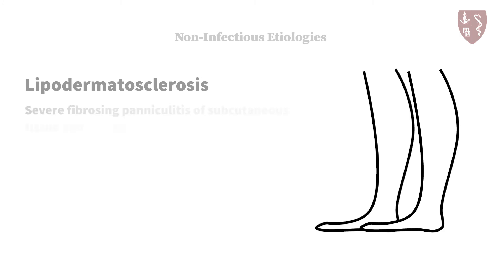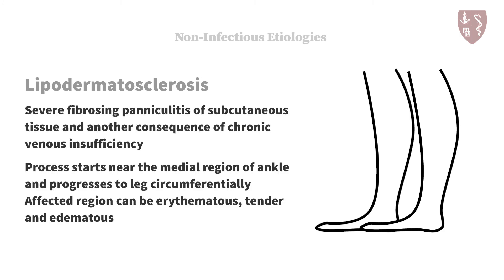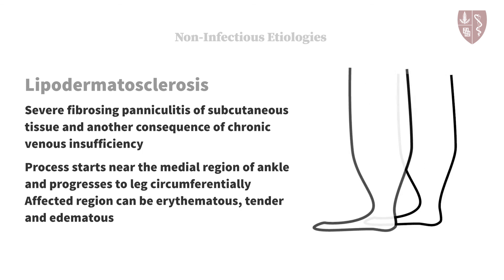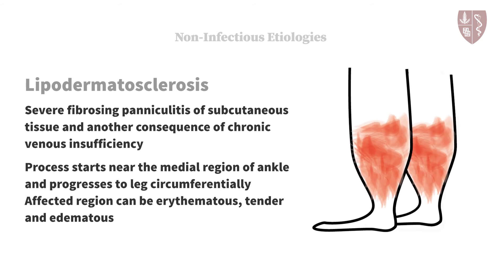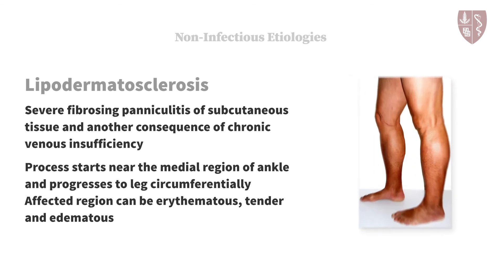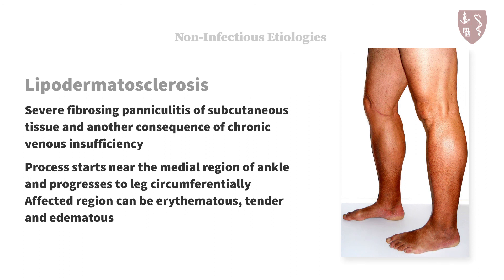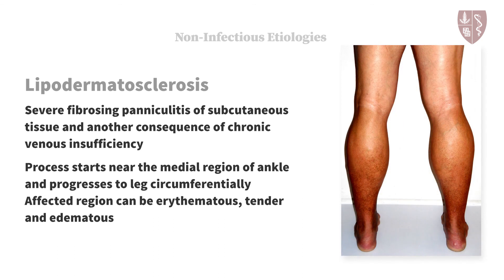Lipodermatosclerosis, in its acute form, is a common cause of pseudocellulitis. It is a severe fibrosing panniculitis of the subcutaneous tissue and is another consequence of chronic venous insufficiency. This process typically starts near the medial region of the ankle and progresses to involve the leg circumferentially, giving the leg the appearance of an inverted champagne bottle. In its acute form, the affected region can be erythematous, tender, and edematous. Although these patients may be at increased risk for acute cellulitis due to their abnormal skin, the chronicity of their symptoms — which can last for months — and the absence of systemic symptoms can help you make the distinction from acute cellulitis.